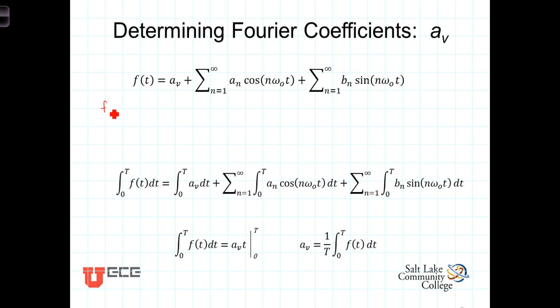What this is saying is that f of t, some periodic signal with period equaling cap T, can be broken out into a sum of terms, a sub v plus... Now, this term right here is n equals 1, so it would be a sub 1 cosine of 1 omega naught t plus a sub 2 cosine of 2 omega naught t plus, and continuing on for an infinite number of terms.